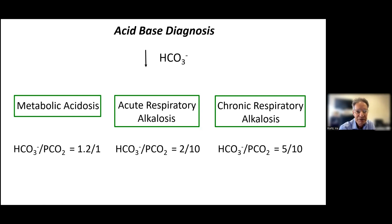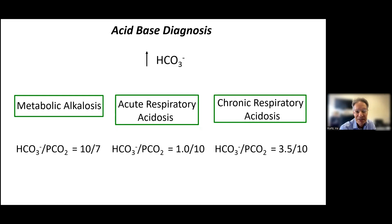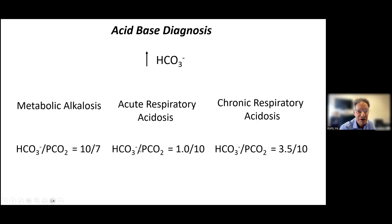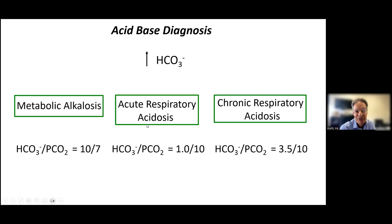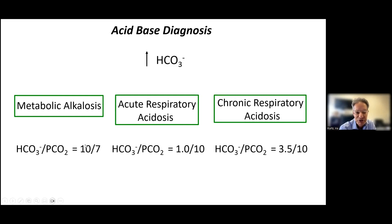If the bicarbonate is increased, again there are three possible diagnoses, each with its own rule you need to memorize. You see which of the three scenarios your patient fits. If it's not one of the first three or second three, then you have a mixed disorder — but remember these are averages, and you need to be clearly outside the expected range. You cannot make an acid-base diagnosis without knowing what the PCO2 is in addition to the bicarbonate.